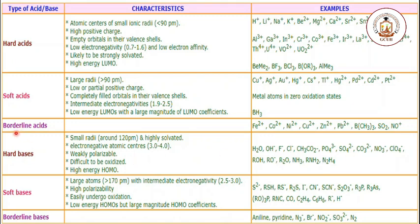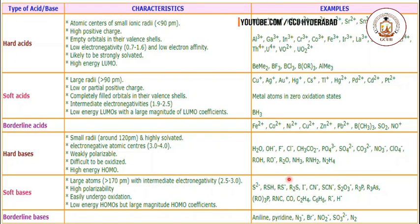In this table you can see hard acids, soft acids, borderline acids, hard bases, soft bases, and borderline bases. All the cations are metal cations and all the anions are non-metals — these are all Lewis acids and bases.